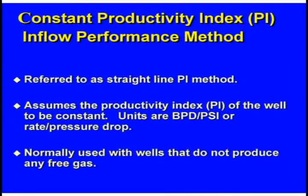The PI index refers to the straight-line method and assumes the productivity of the well to be constant. The units in the United States are barrels per day per PSI — the rate divided by the pressure drop. It's normally just used now with wells that don't make any free gas, like wells that make all water.